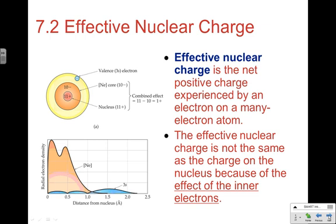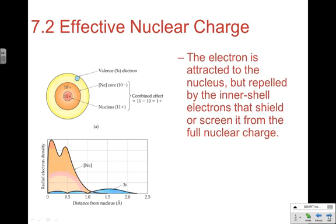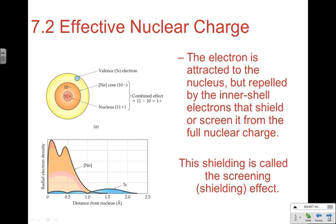Effective nuclear charge is the net positive charge experienced by an electron in a many-electron atom, taking into account both factors. It's not the same as the charge of the nucleus because of the effect of inner-level electrons repelling — which basically works against the attractive force of the nucleus. The inner-shell electrons shield or screen the valence electrons from the full nuclear charge. Screening and shielding mean the same thing and are used interchangeably.